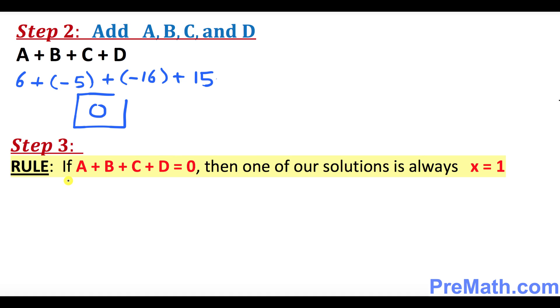And in step three, there's a very important rule. This rule states that if a plus b plus c plus d turns out to be equal to 0, as in our case, then one of our solutions will always be x equal to 1. So one of the solutions is x equal to 1 as long as their sum turns out to be 0.